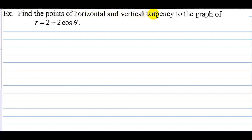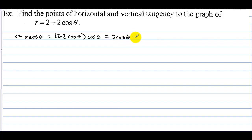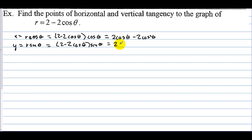Find the points of horizontal and vertical tangency to the graph of this equation. X is equal to R cosine of theta, which is equal to 2 minus 2 cosine theta times cosine theta, giving 2 cosine theta minus 2 cosine squared theta. Y is equal to R sine theta, which equals 2 cosine theta times sine theta, which is 2 sine theta minus 2 sine theta cosine theta.